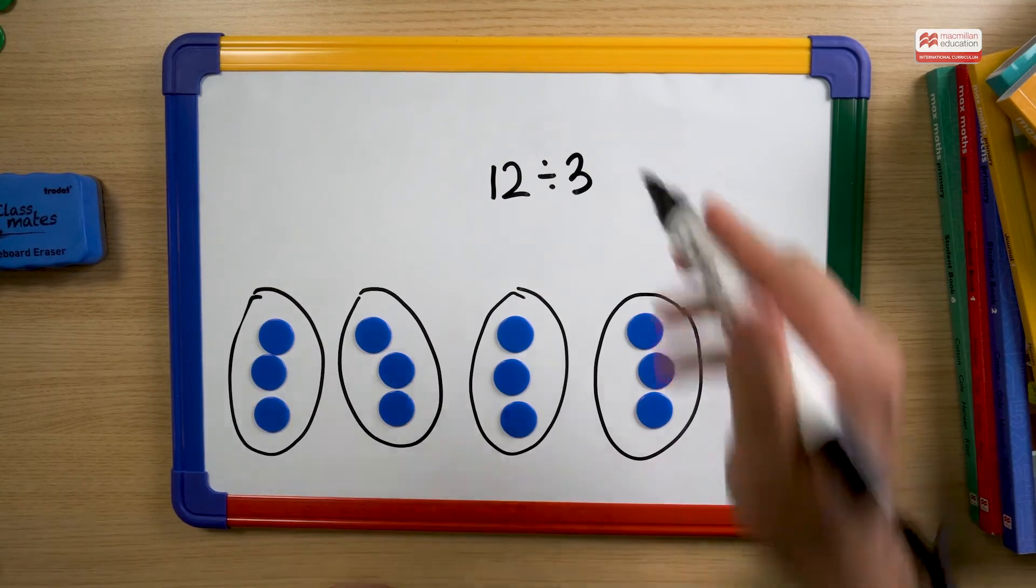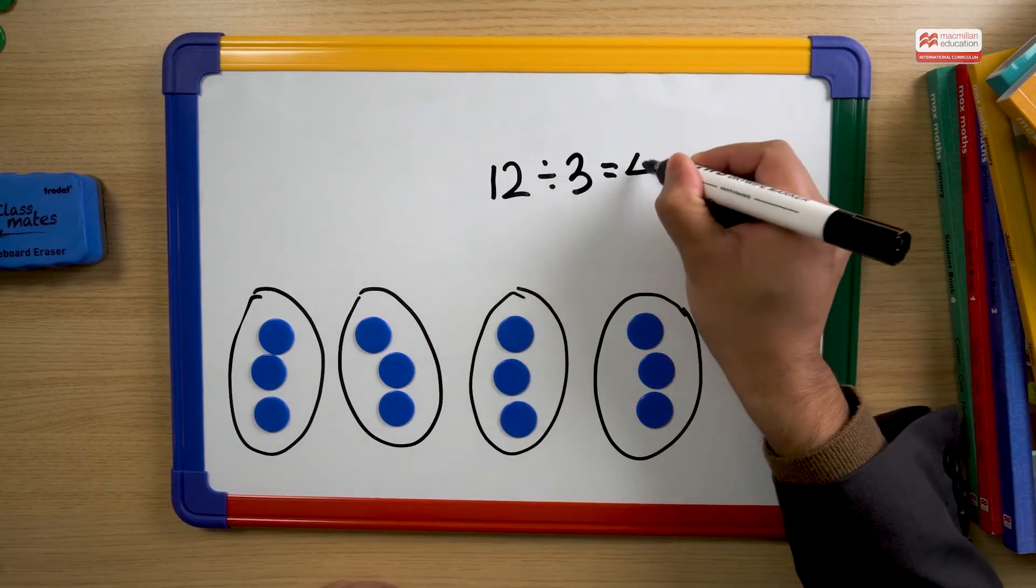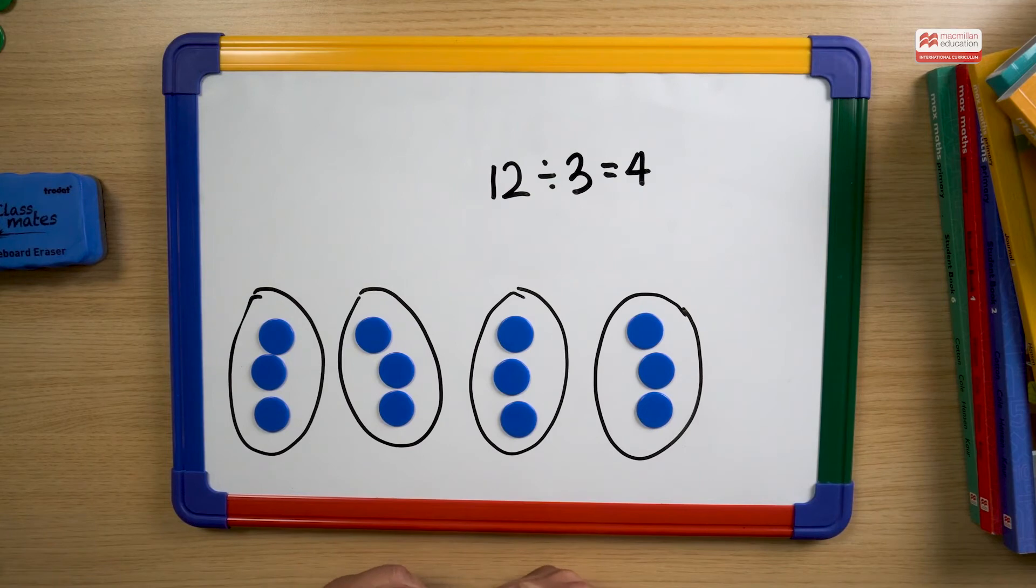How many groups do we have? We have four groups. So 12 divided by three is equal to four.